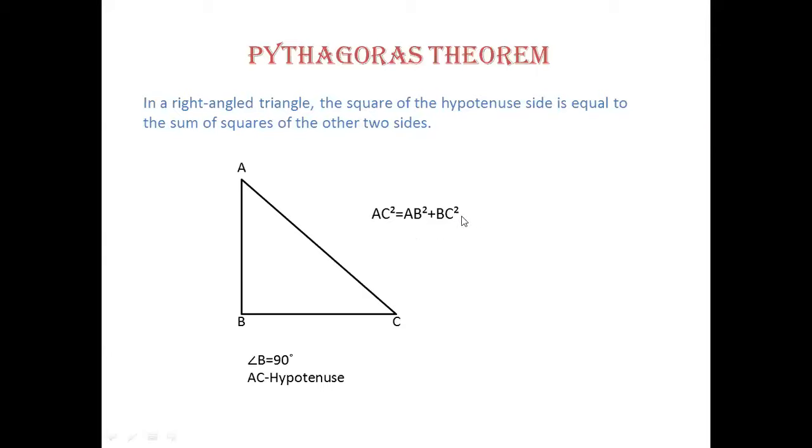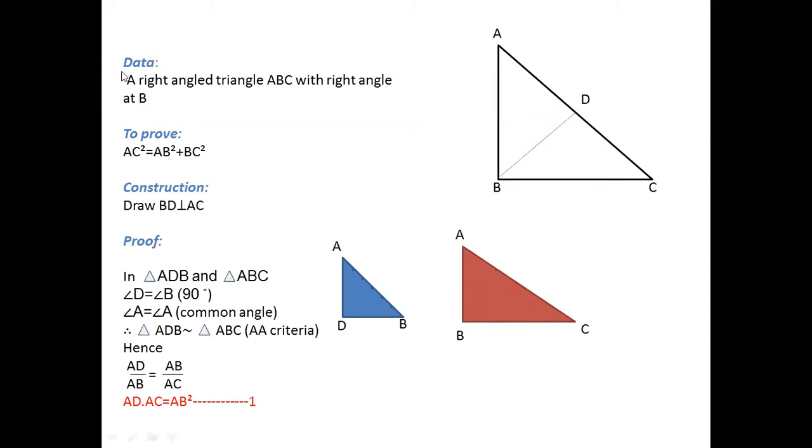Now we have to prove. First of all, the data which we have: a right angle triangle ABC with right angle at B. To prove: AC square is equal to AB square plus BC square. Construction: draw BD perpendicular to AC, so angle BDC is 90 degrees.